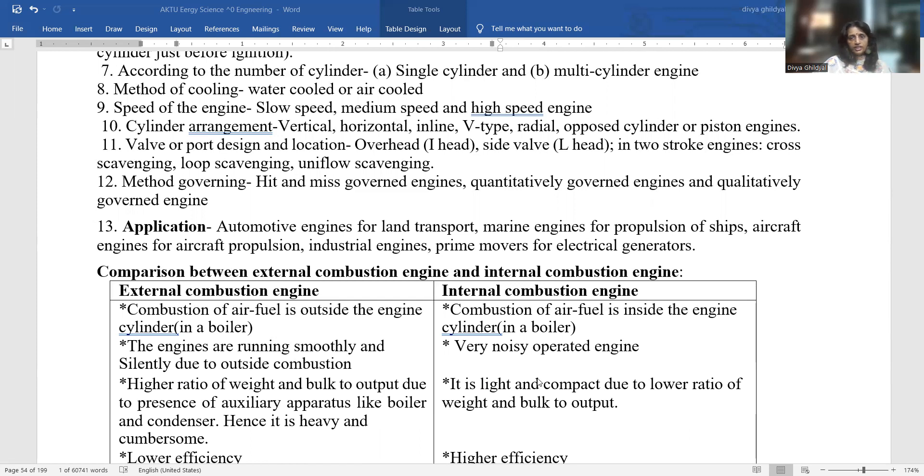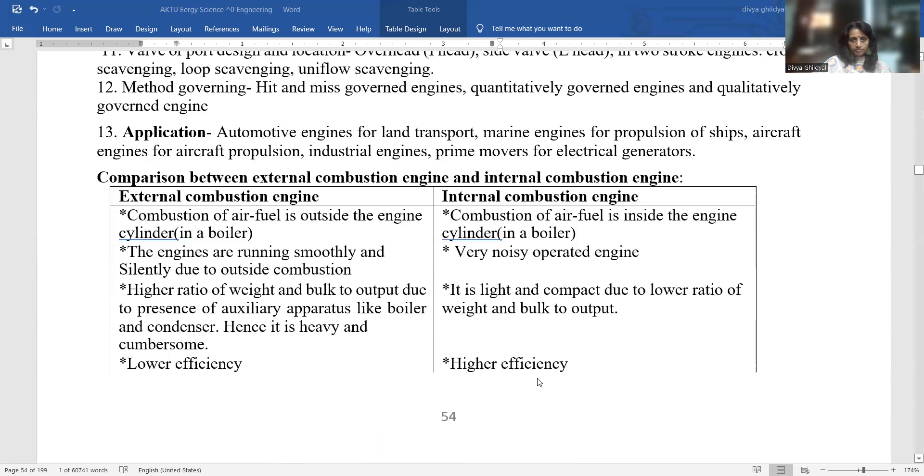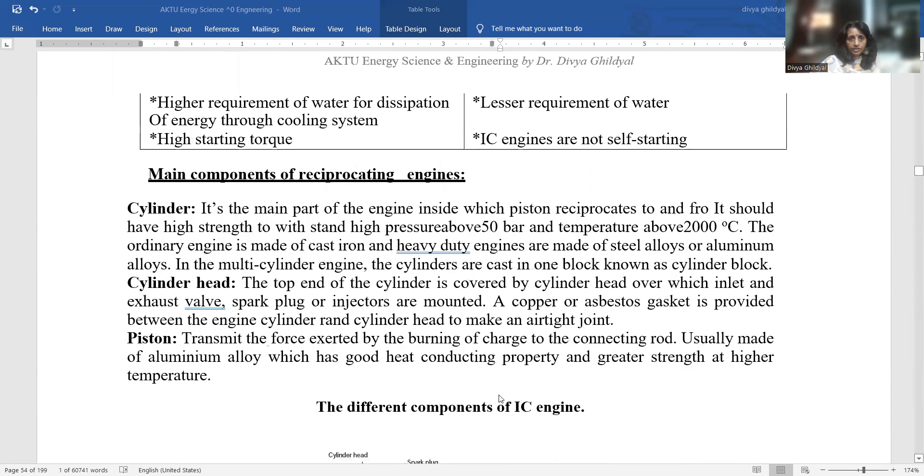External combustion engine and internal combustion engine: In the external combustion engine, air fuel is outside the engine like a boiler. Combustion of air fuel in the internal is inside the engine. Engines are running smoothly and silently due to outside combustion. Internal combustion engine is very noisy. Higher ratio of weight and bulk to output, and it is light. It has lower efficiency, and the internal combustion engine has higher efficiency.